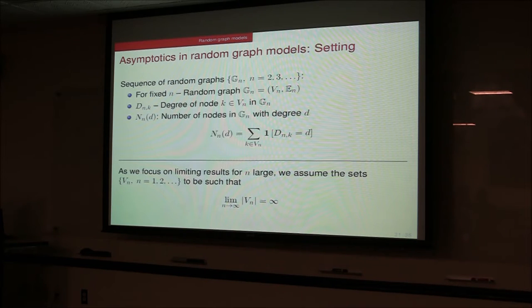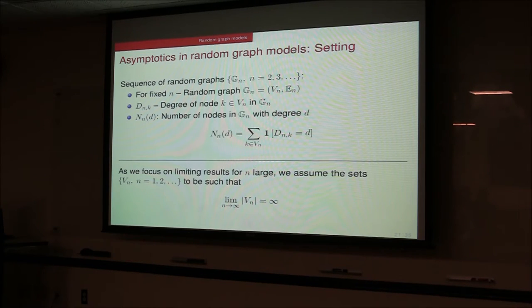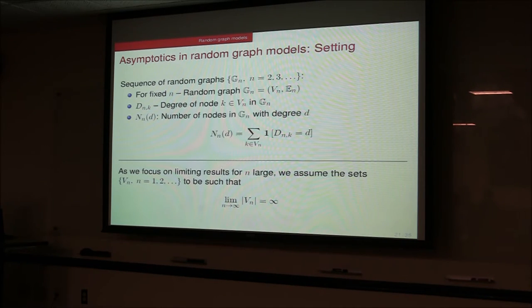A student asks why generate random graphs when you already have one real-world instance. The answer: as the graph evolves over time, if you have a model for the real-world network, that helps you study and predict its future behavior. Also, if you want to design a network with certain properties — say, a certain degree distribution, clustering coefficients, or diameter — random graphs are the tool for generating such networks.